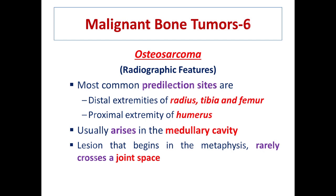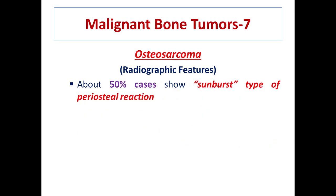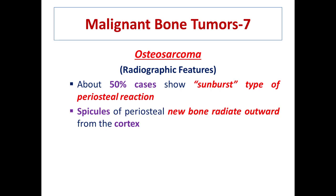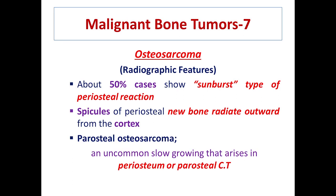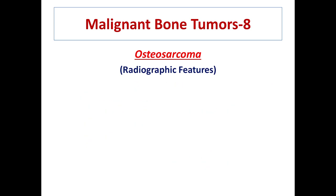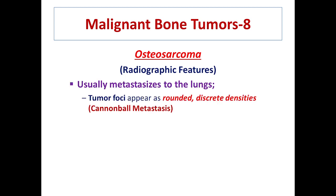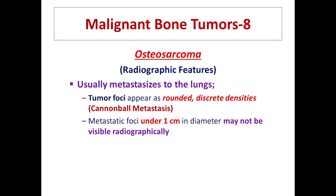Regarding periosteal reaction, it may be sunburst or spiculated; sunburst is most common at approximately 50%, with spicules of periosteal new bone radiating outward. Periosteal osteosarcoma is an uncommon, slow-growing form that arises in the periosteum and periosteal connective tissue. Osteosarcoma usually metastasizes to the lungs, where tumor foci appear as rounded discrete densities called cannonball metastases. Metastatic foci under one centimeter in diameter may not be visible radiographically, so CT scans may be required.